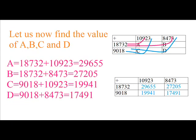Let us now find the value of A, B, C and D. A equals 18732 plus 10923 equals 29655. B equals 18732 plus 8473 equals 27205. C equals 9018 plus 10923 equals 19941. D equals 9018 plus 8473 equals 17491.